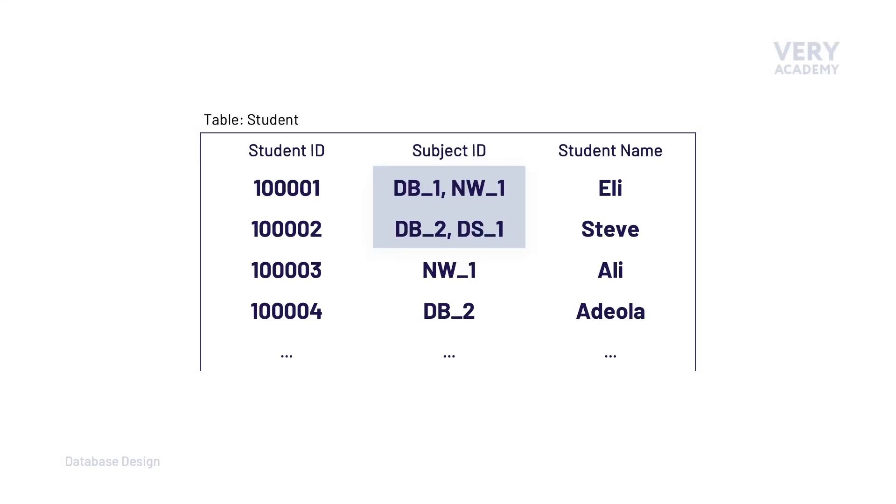So we can work through this by better understanding the data that's going to be inserted into the table. Now we might need to consult the requirements or do some additional tasks to determine this. But we can say in general terms that a student, this is the student entity, will only have one ID.